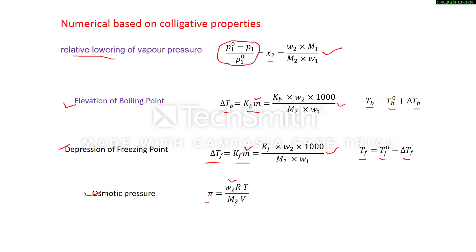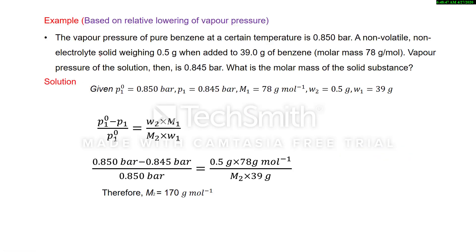Osmotic pressure pi equals w2·R·T divided by M2·V. In all these formulas, the subscript 2 is used for solute and 1 is used for solvent. For example, w2 is mass of solute, w1 is mass of solvent, M1 is molar mass of solvent, and M2 is molar mass of solute. Now let us discuss the numericals one by one.